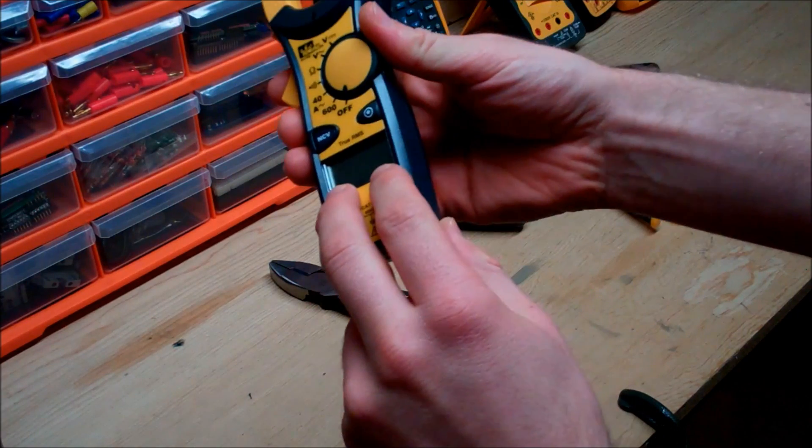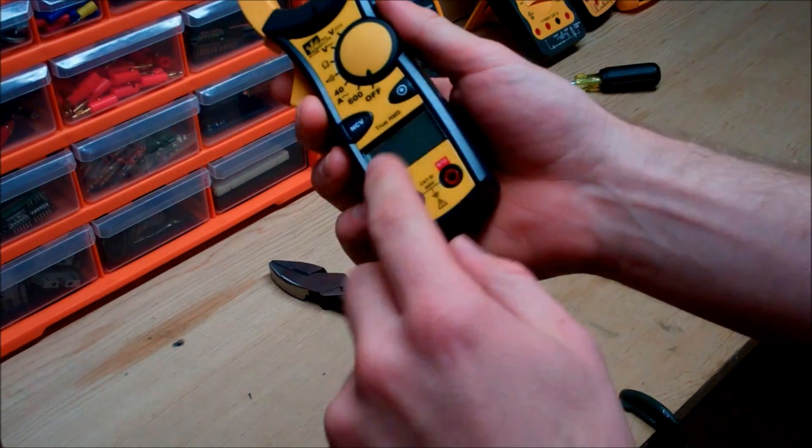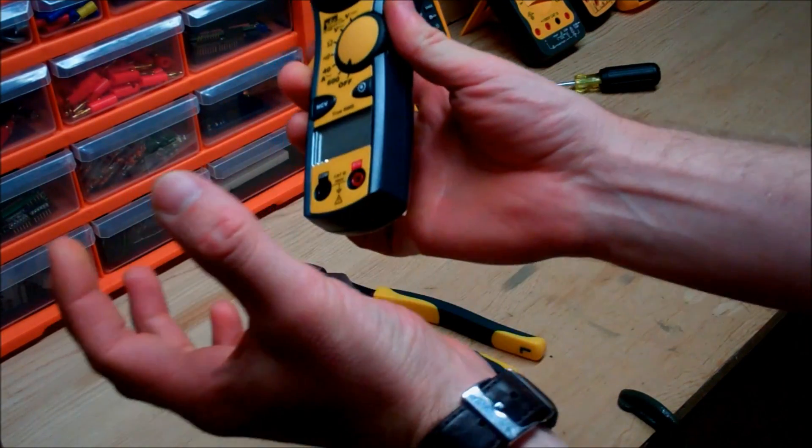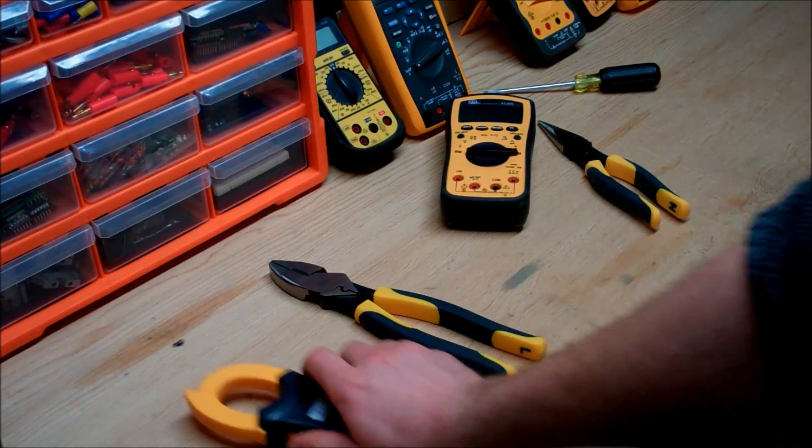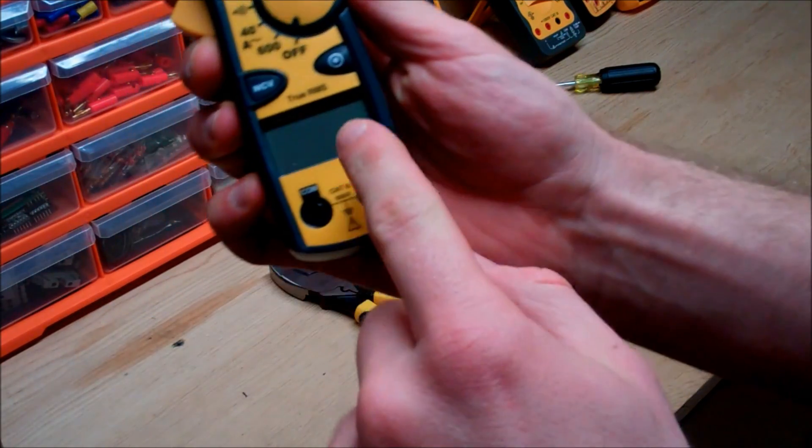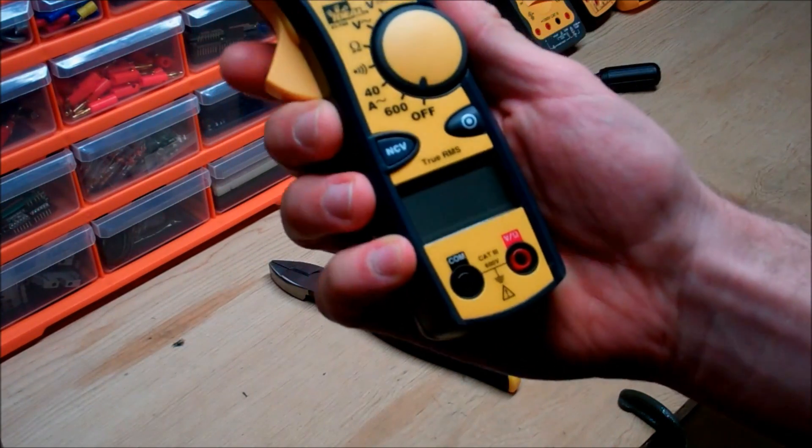And then it also has a recessed LCD screen. What I mean is that the plastic right here extrudes beyond this, so it gives you a little bit of protection. So when you drag that across, you're not going to get any scratches or marks on there. Really nice feature.